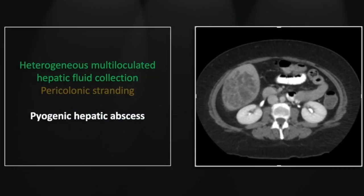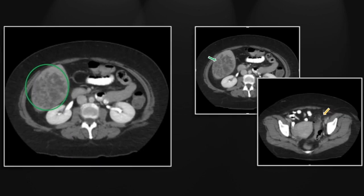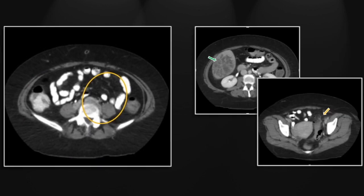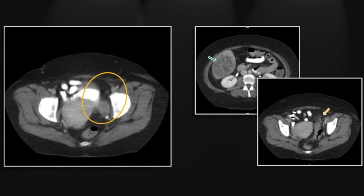Our next case is a straightforward pyogenic hepatic abscess. It's worth noting that these abscesses tend to be multiloculated and very complex in appearance, yet still are typically just E. coli infection from diverticulitis or colitis — clearly the most common source and clearly the case in this instance. Again, that multiloculated complex fluid collection within the right liver lobe and the diverticulitis with stranding in the left lower quadrant.